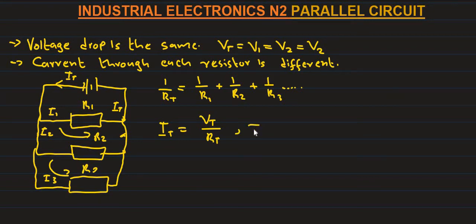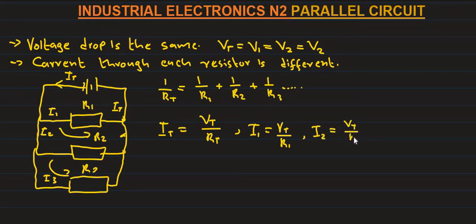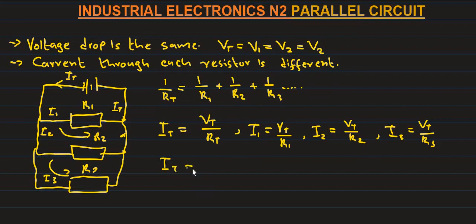And we want current through each resistor: for R1, R2, R3. Since voltage is the same across all branches, I1 equals V total divided by R1. Current through resistor 2: V total divided by R2. Current through resistor 3: V total divided by R3. So I total equals I1 plus I2 plus I3.